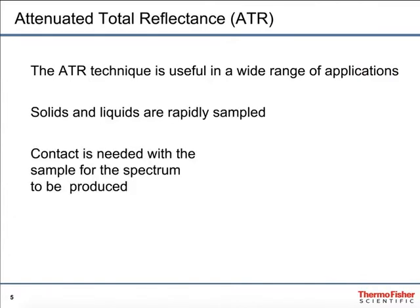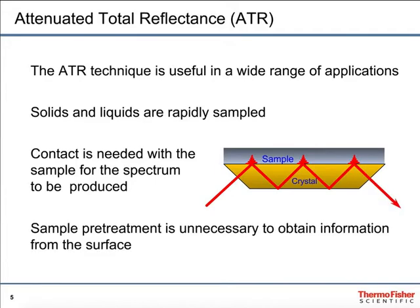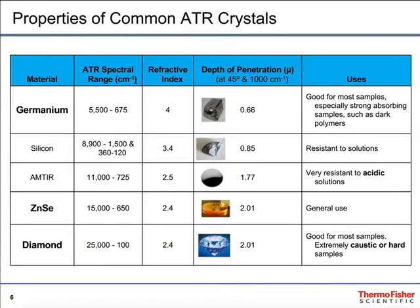Attenuated total reflection, or ATR, has grown to become the most popular technique currently used in infrared. Solids and liquids can be very easily analyzed. The critical thing here is that the sample must be in contact with the active surface of the crystal, where the IR beam interacts with it. Sample pre-treatment is usually not needed — whether it's a powder, a liquid, or a gel, you can get good contact with the surface and do ATR. At the heart of the ATR technique is the crystal.